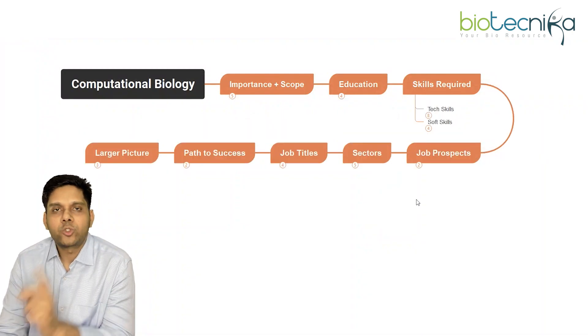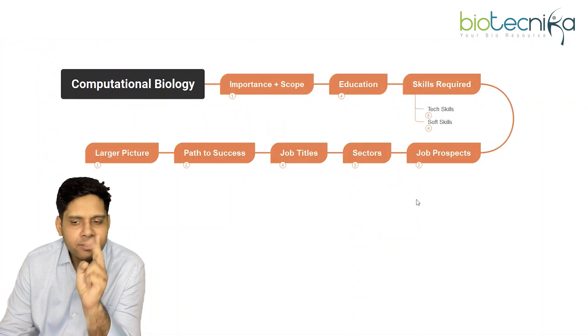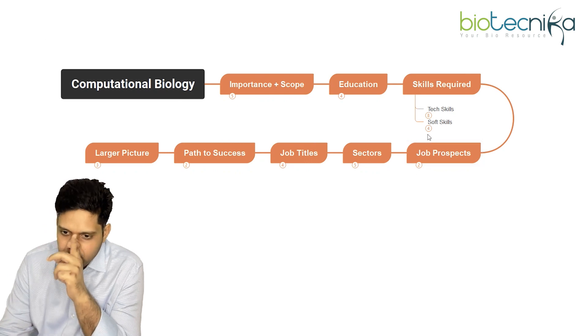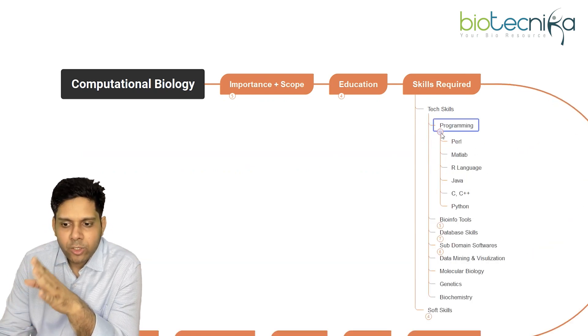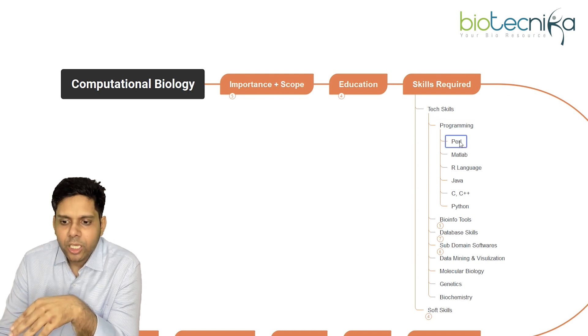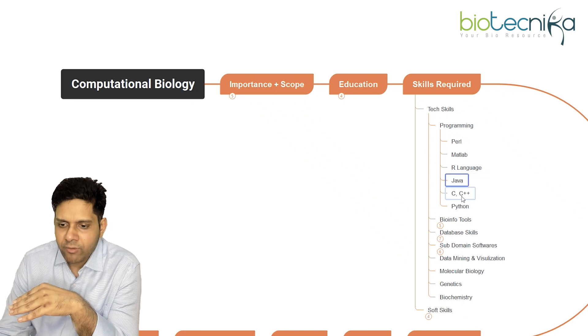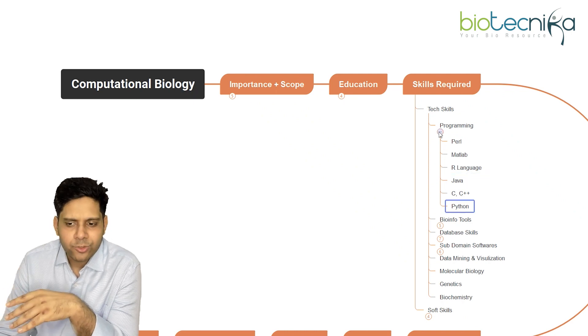I'm going to classify the skill sets now — probably during your Bachelor's or Master's, wherever you are, you can start building your skill set. Dividing into two parts: technical skills and soft skills. Under technical skills, programming is key. You should know languages like Perl, Matlab, R, Java, C, C++, and Python.